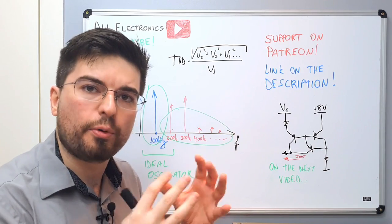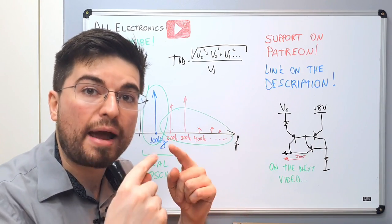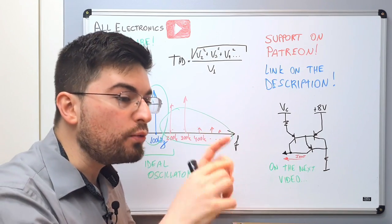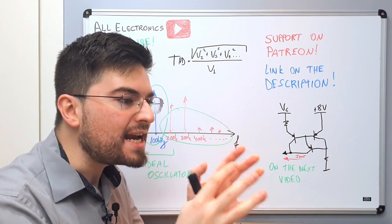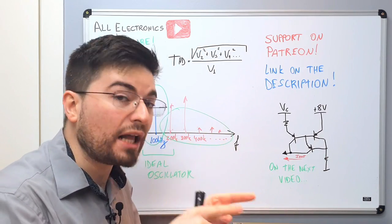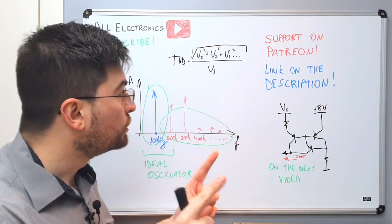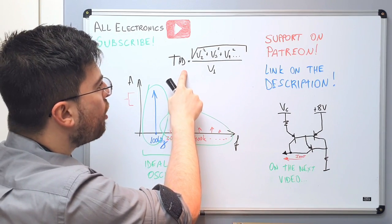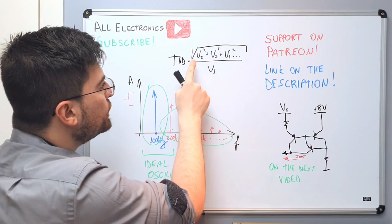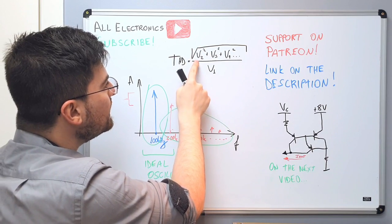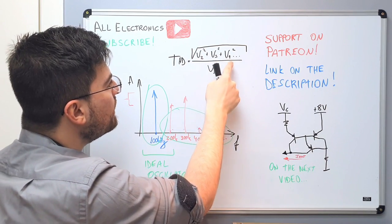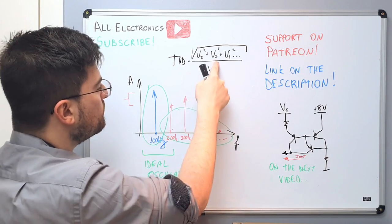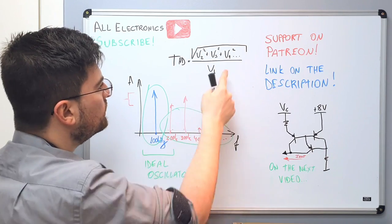What is very important is that the way of measurement will change the result. So the way we define a measurement changes what we are measuring. On the total harmonic distortion formula we see that we are using only the harmonic-related terms — the second harmonic, the third harmonic, the fourth harmonic.